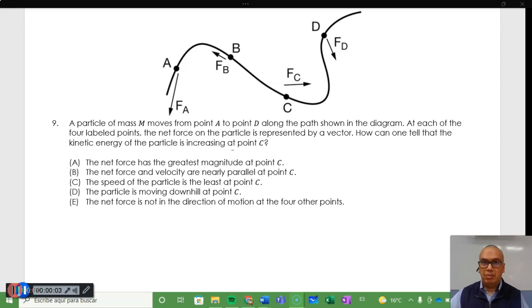A particle of mass m moves from point A to point D along the path shown in the diagram. At each of the four labeled points, the net force on the particle is represented by a vector.